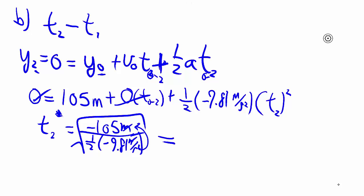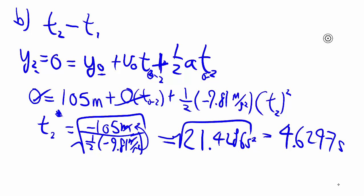Negative sign cancels out, so we're not trying to take the square root of a negative number. And we get that we have square root of 21.4286 seconds squared, which turns out to be 4.6297 or so seconds.